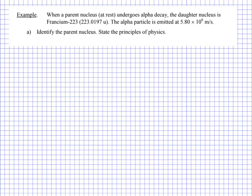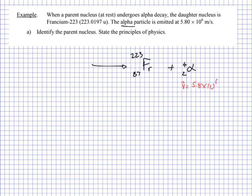Looking at this reaction, it's going to give us Franzium 223. Using our periodic table, we see the atomic number is 87, which means there are 87 protons in Franzium. It's also going to give us an alpha particle. We also know the alpha particle has a velocity of 5.8 × 10⁶ meters per second, but we won't need that yet since we're just finding the parent nucleus.